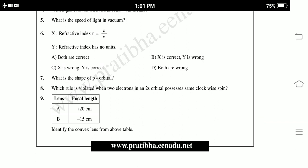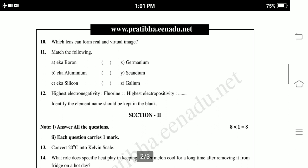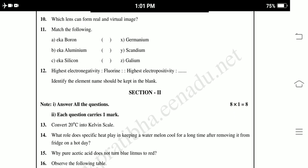A, plus 20 centimeters, B, minus 15 centimeters. Identify the convex lens from the above table. Next, tenth, which lens can form real and virtual images?